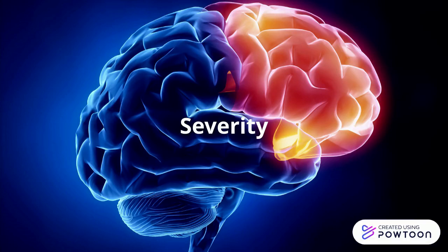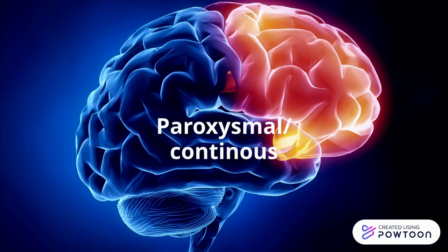The second point is that peripheral nystagmus is usually paroxysmal while central nystagmus is mostly continuous. So remember: P and P — peripheral is paroxysmal, central is continuous.